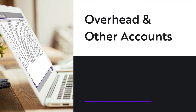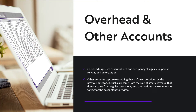Continuing along, we get to overhead expense accounts. Overhead expenses consist of rent and occupancy charges, equipment rentals, and amortization. Other accounts capture everything that isn't well described by the previous categories, such as income from the sale of assets, revenue that doesn't come from regular operations, and transactions the owner wants to flag for the accountant to review.